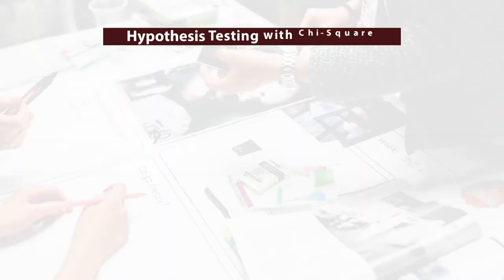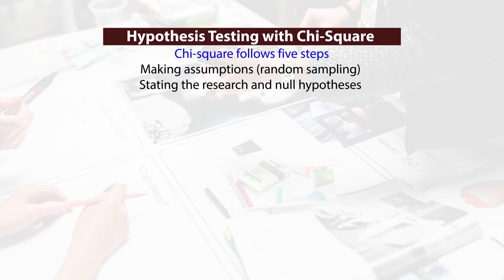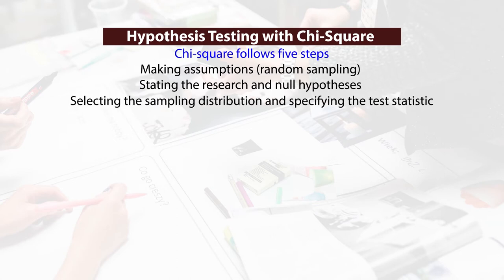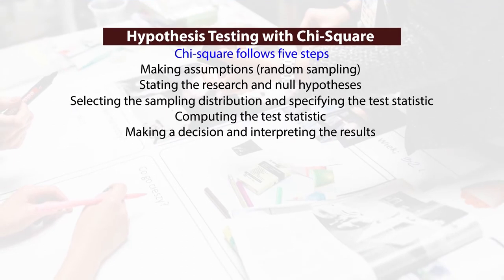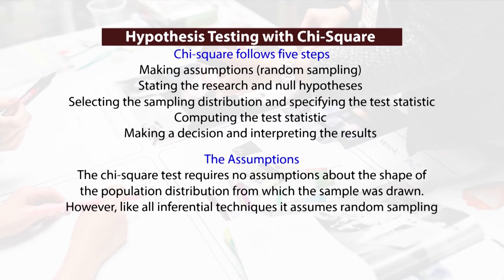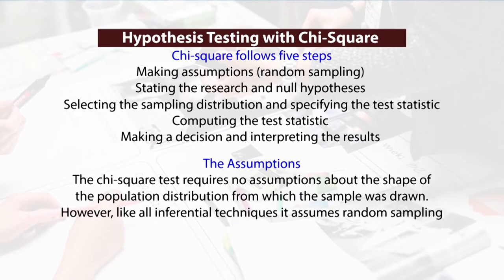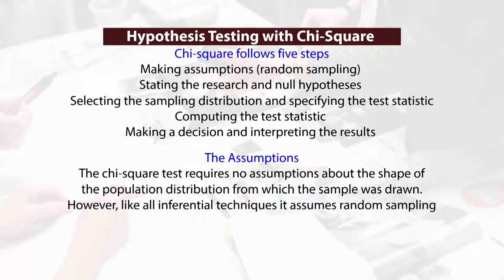Hypothesis testing with Chi-square follows five steps: making the assumption of random sampling, stating the research and null hypothesis, selecting the sampling distribution and specifying the test statistic, computing the test statistic, and making a decision and interpreting the results. The Chi-square test requires no assumption about the shape of the population distribution from which the sample was drawn; however, like all inferential statistics, it assumes random sampling.